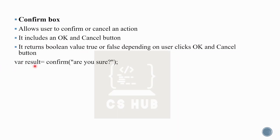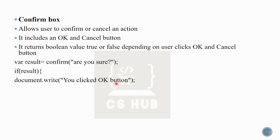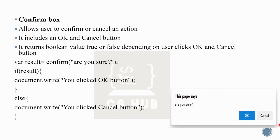For example, result equals confirm('Are you sure?'). If result is true, the user clicked OK; otherwise the user clicked Cancel. The window.close() call is also associated with this confirm pattern — if the user confirms exit, the window closes; if canceled, the window remains open.